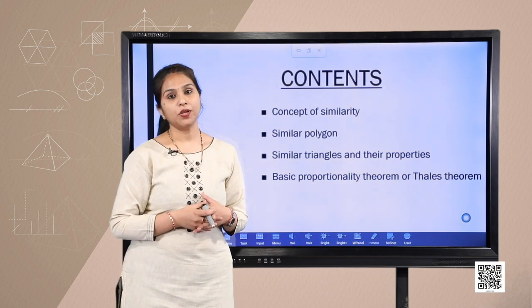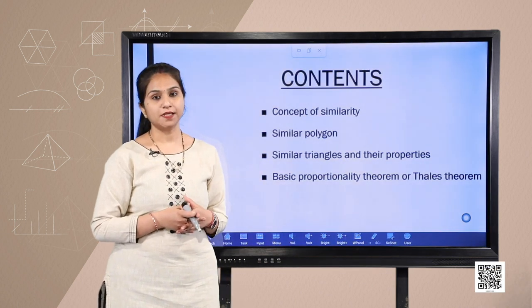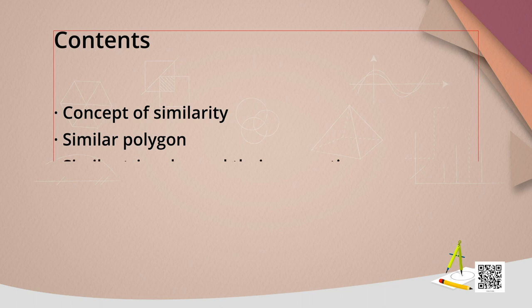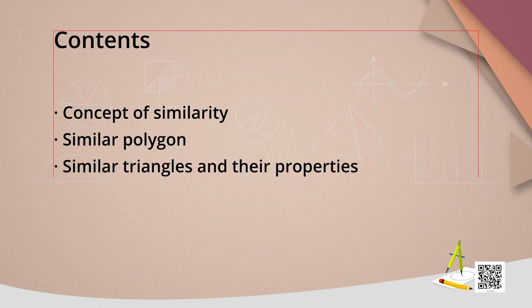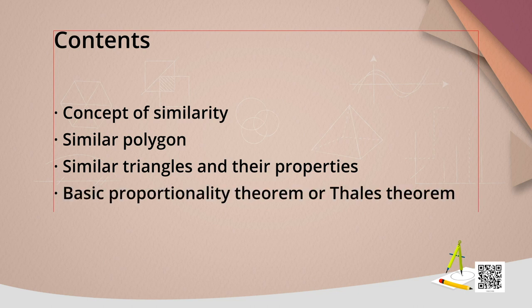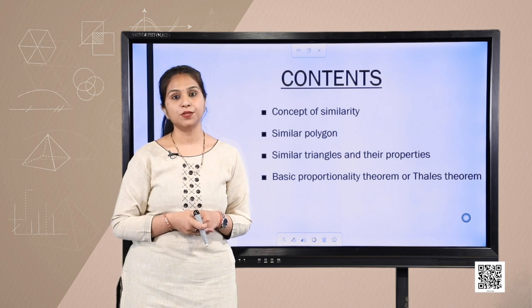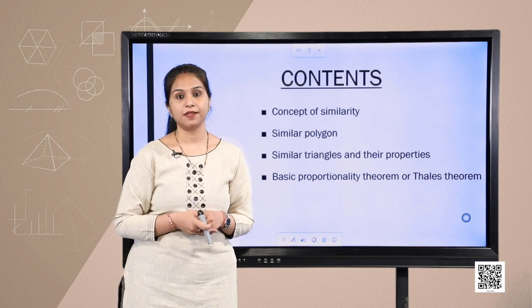In this chapter we are going to discuss the concept of similarity, similar polygons, similar triangles and their properties, and lastly one very important theorem — the Basic Proportionality Theorem, which is also known as Thales theorem.